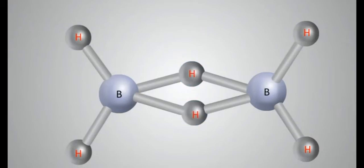The two boron atoms and the four terminal H atoms lie in the same plane, while the two bridging H atoms are in a plane, perpendicular to the rest of the molecule.